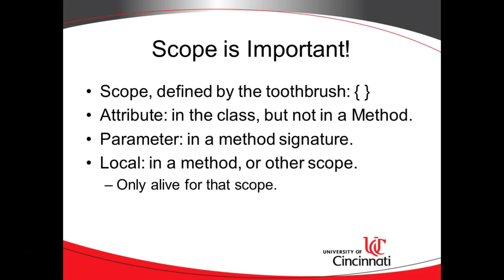Scope is important. If you're new to programming, scope might not be very clear. Scope is defined by the curly braces — on an American keyboard, you see these to the right of the P key. These curly braces indicate a boundary of work that's going to be done. I think it looks like the head of a toothbrush, which is a good analogy: when I wake up in the morning one of the first things I do is brush my teeth, and when I go to bed at night one of the last things I do is brush my teeth — it's a boundary of my day. That's what these curlies mean.